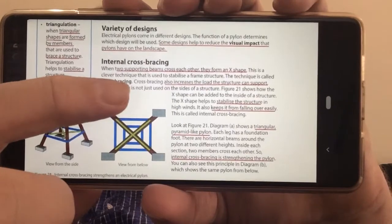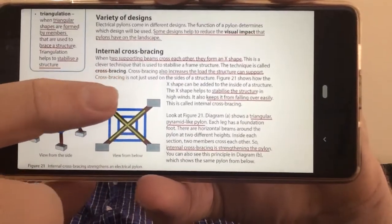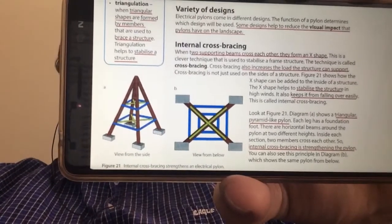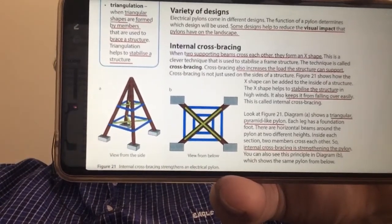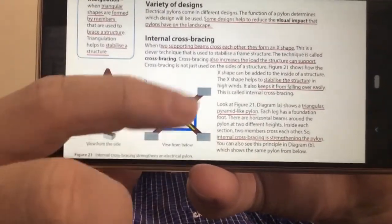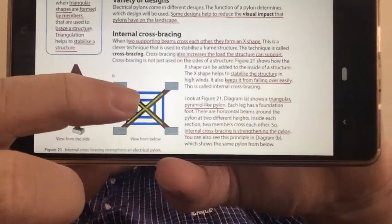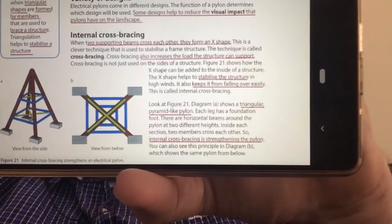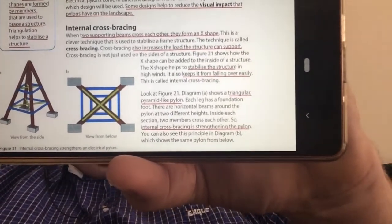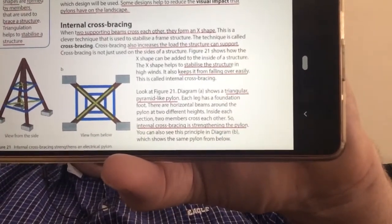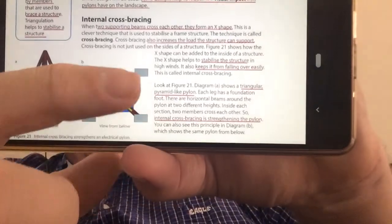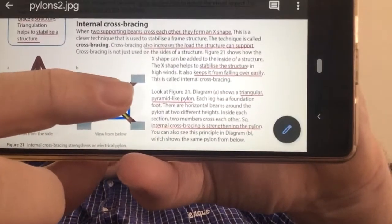And then there's also something called internal cross bracing. So here we've got like a pyramid shaped pylon with this internal cross bracing that runs through the middle of it. And that is going to make it stand up to very strong winds, probably even light earthquakes and things like that. It stops it from falling over very easily and then it allows it to hold up those very heavy cables.